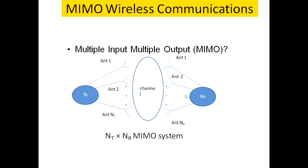These signals are captured by N receiver antennas, represented by NR, where NR represents the total number of antennas at the receiver side.